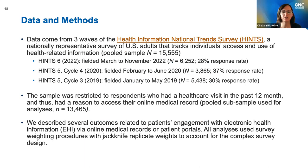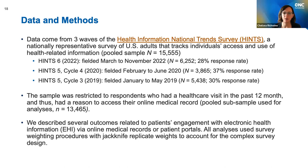These figures highlight data from three waves of the Health Information National Trend Survey — HINTS for short — which is a nationally representative survey of U.S. adults that tracks individuals' access and use of health-related information. The latest data come from HINTS 6, which was fielded in 2022. These are very new data released just about a week ago, at the end of April. I compare these to a pooled sample of 2019 and 2020 data, which is HINTS 5 cycles 3 and 4.